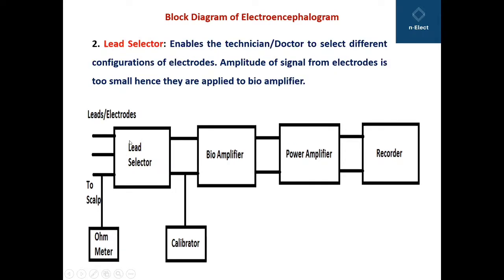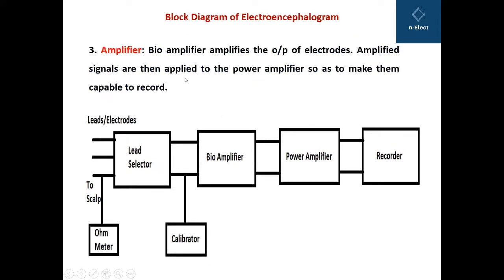The lead selector enables technicians or doctors to select different combinations or configurations of electrodes, depending upon the diagnosis required for the particular patient. The amplitude of the signal from the electrodes is too small, and hence they are applied to the bioamplifier, where the strength of the signal picked up from the patient's brain is boosted. The bioamplifier amplifies the output of the electrodes.